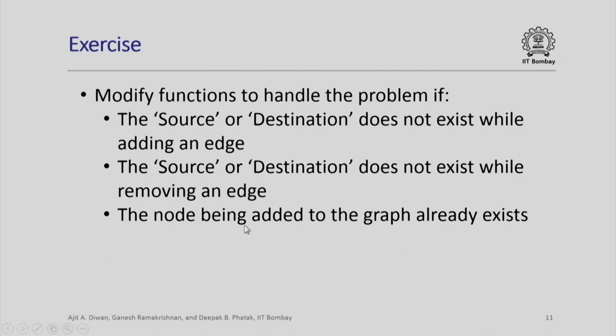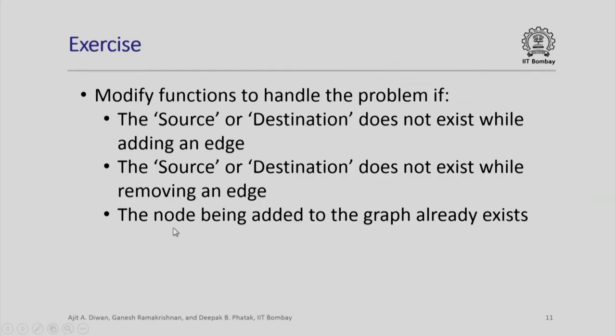As an exercise, I would like to suggest that you try to modify functions to handle the problems if, for example, the source or destination does not exist while adding an edge, or the source or destination does not exist while removing an edge. More important, and this is a harder problem, the node being added to the graph already exists. Right at the beginning, you remember we added nodes 1, 2, 3, 4, 5 arbitrarily because these were fixed nodes that we have. But assume that you are getting the nodes to be added from the user in an iterative fashion, and by mistake a user prescribes the node which already exists. So the node being added to the graph, if it already exists, well we must not add it.